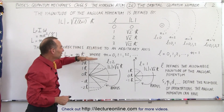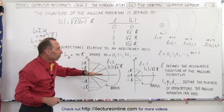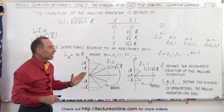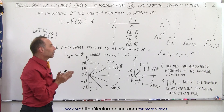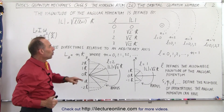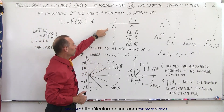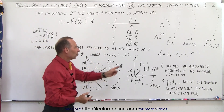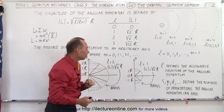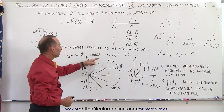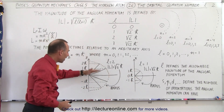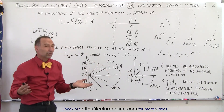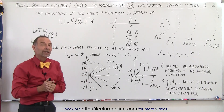Then, depending on the value of L, there will be a certain number of position states — basically directions of the angular momentum. When L equals 0 there's no direction defined; when L equals 1 there are three directions; when L equals 2 there are five directions; when L equals 3 there are seven directions.